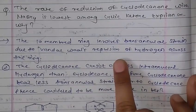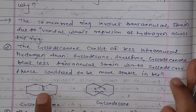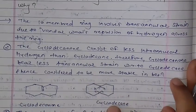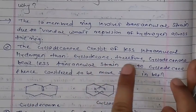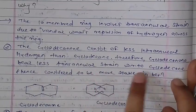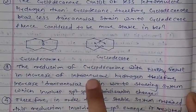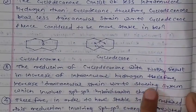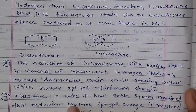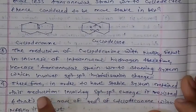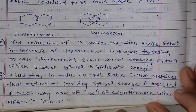In the reduction, transannular strain is relevant. Cyclodecanone has less transannular hydrogen interaction than cyclodecane, therefore it bears less transannular strain and is more stable. Upon reduction of the ketone with a hydride reagent, the sp2 to sp3 change increases the transannular hydrogen interactions, increasing the strain with respect to the starting system. Therefore, the rate of reduction is higher with the hydride reagent and lowest for this system.